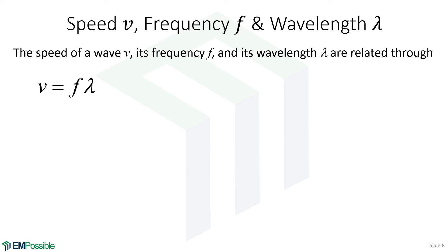The speed, frequency, and wavelength of a wave are related through V equals F lambda. This actually applies to any wave — it could be a sound wave, a vibration on a string, a gravity wave, or an electromagnetic wave. All waves follow this.